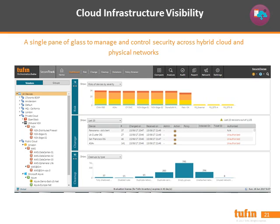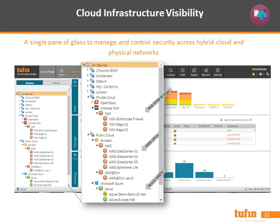When gaining cloud infrastructure visibility, we're looking at a single pane of glass to manage and control security across hybrid cloud and physical networks. From a single UI, you can manage your AWS VPCs, your Azure VNets, your NSX distributed firewalls, as well as other legacy firewalls — all from the same UI, with no need to jump between consoles.